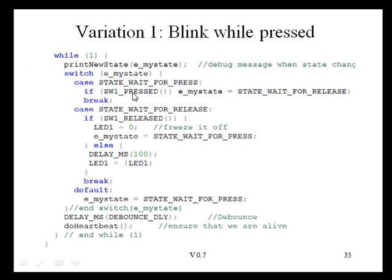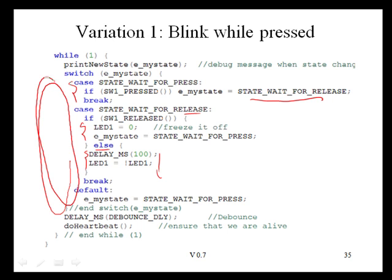Here are the modifications we've made. This initial state, waiting for press, has not changed. When it's pressed, we're going to go to state wait for release. Once we're in this state, while it's pressed, this is the code that's going to be executed when it's released. This is the code for the else clause when it's pressed. While it's pressed, we're going to be blinking — delay 100 milliseconds, toggle the LED. We're continually going through this loop sampling the switch.